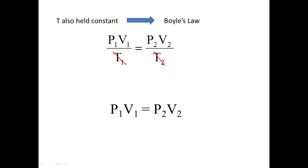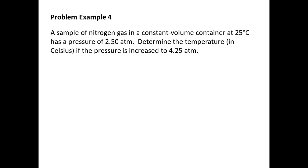And so, I trust that you can do problems that are more simple with the combined gas law where you're given five variables and you solve for the sixth. We're going to do a couple examples where we have to derive another gas law from it. So, let's look at problem example four. We have a sample of nitrogen gas in a constant volume container at 25 degrees Celsius and it has a pressure of 2.50 atmospheres. Determine the temperature in Celsius if the pressure is increased to 4.25 atmospheres.